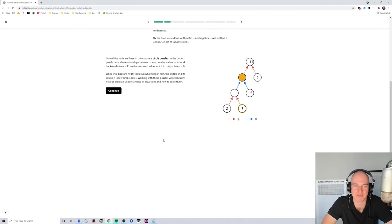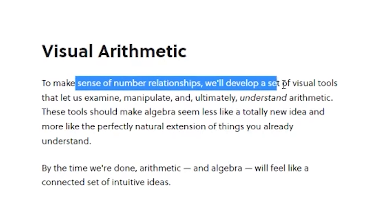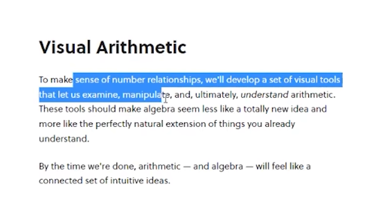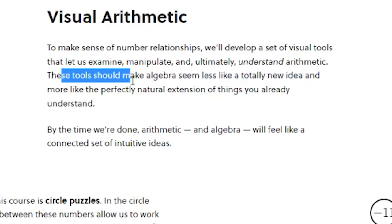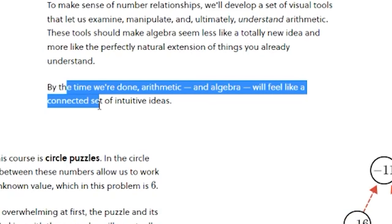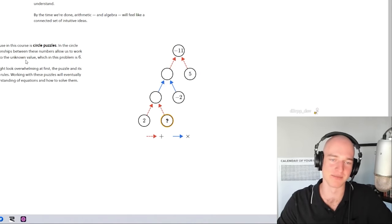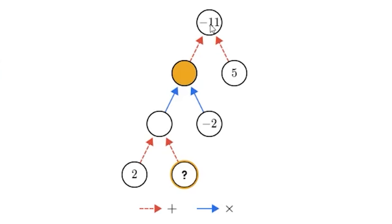All right, we're starting off with just basic algebra — visual arithmetic. This lesson will develop a set of visual tools to examine, manipulate, and ultimately understand arithmetic. These tools should make algebra seem less like a totally new idea and more like a perfectly natural extension of things you already understand. By the time we're done, arithmetic and algebra will feel like a connected set of ideas. I'm pretty sure I already know algebra, but let's just run through it to see.